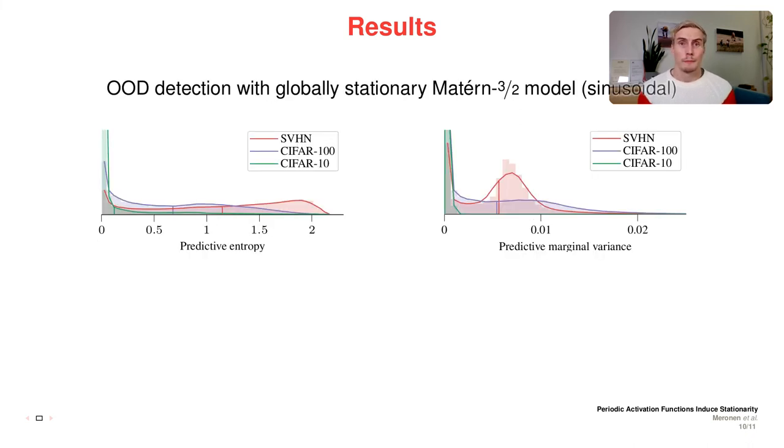Here we have an out-of-distribution detection experiment on image classification. The model has been trained on CIFAR-10 images and tested on CIFAR-100 and SVHN images. CIFAR-100 images are similar to the training CIFAR-10 images but from different classes. The SVHN images are very different from the training images as they are images of house number plates instead of natural scenes. Looking at the sample predictive marginal variance histogram on the right, we can see that the model most confidently classifies the in-distribution data, the CIFAR-10 dataset, and is less confident on CIFAR-100 images and least confident on the most different SVHN images, which is an intuitive result.